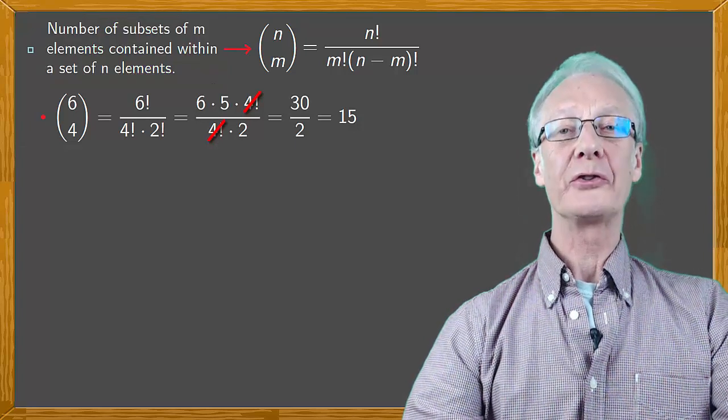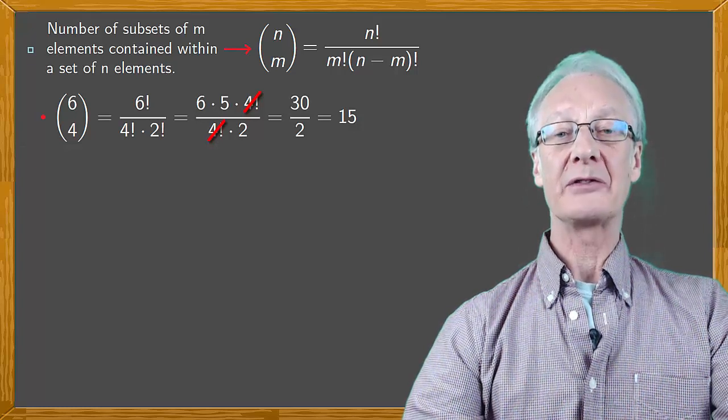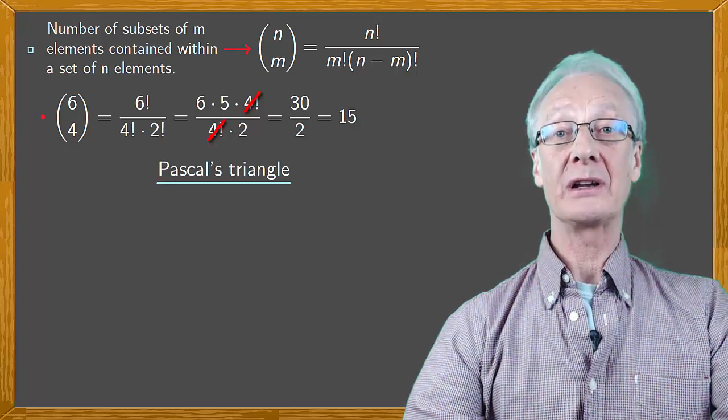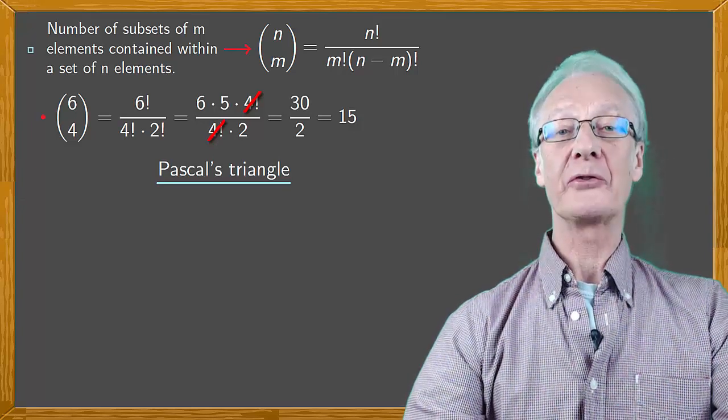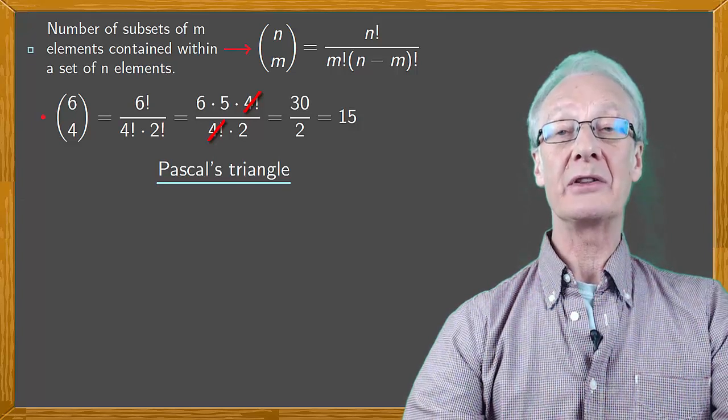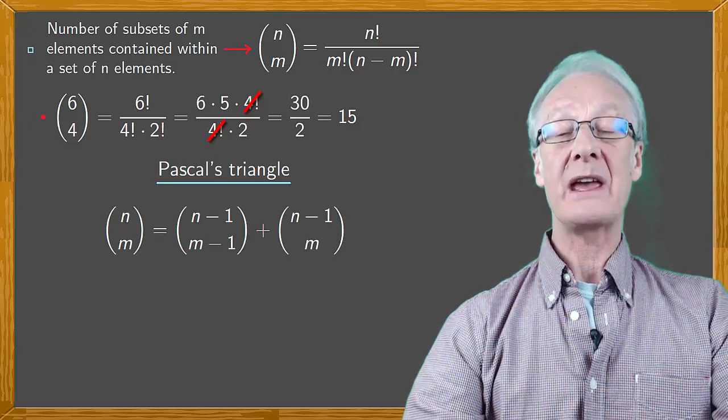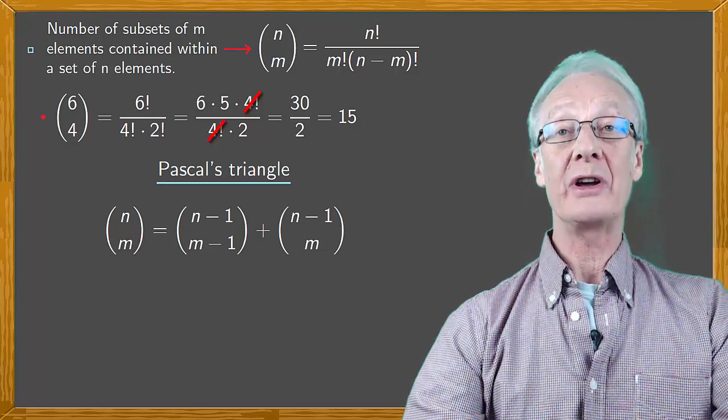It's also useful to know that the combinatorial numbers are the same as the numbers found in Pascal's triangle, which is also known as Tartaglia's triangle. This follows from a simple property of combinatorial numbers, namely that n over m is n minus one over m minus one plus n minus one over m.